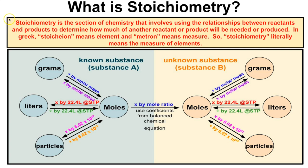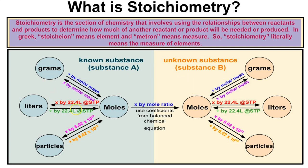In stoichiometry, what we're trying to do is use the relationships that we see in a chemical equation to determine how much of something else in that chemical equation will either be needed or will be produced. When we're working on stoichiometry problems, there are all kinds of different types: mass to moles, volume to grams, particles to particles, and several other types. If you take a few moments to familiarize yourself with this flowchart, stoichiometry should be fairly simple.